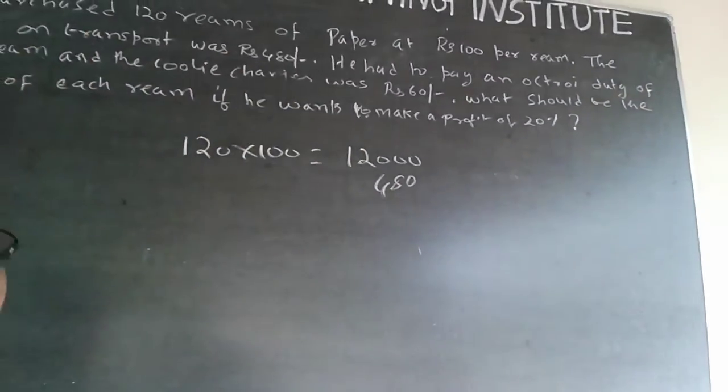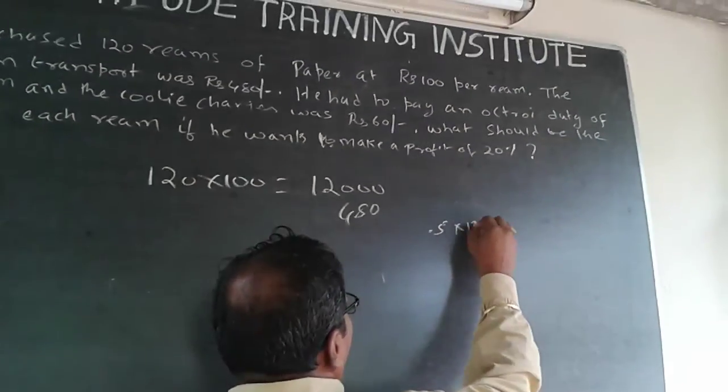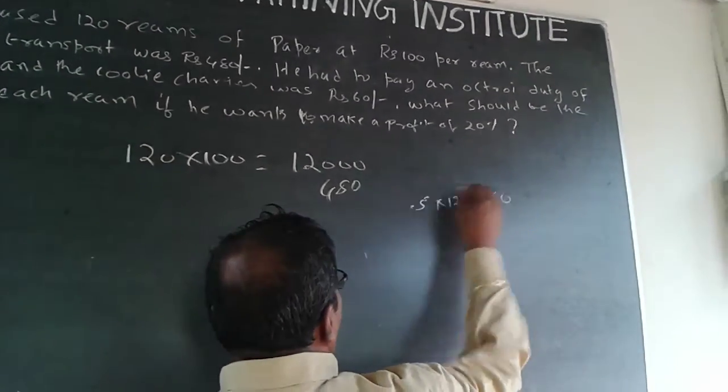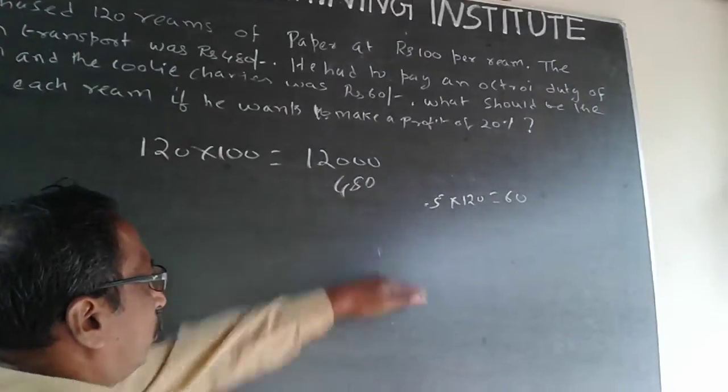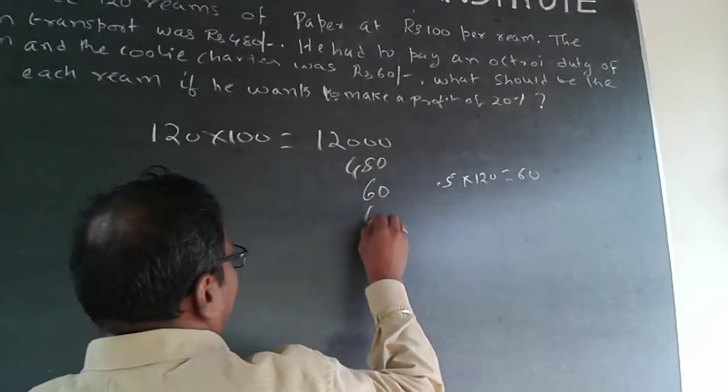Then he is giving an octroy duty of 50 paise per ream, so 0.5 into 120 will be 60 rupees. Add this to the total cost. And then 60 rupees as coolie charges, plus 60.